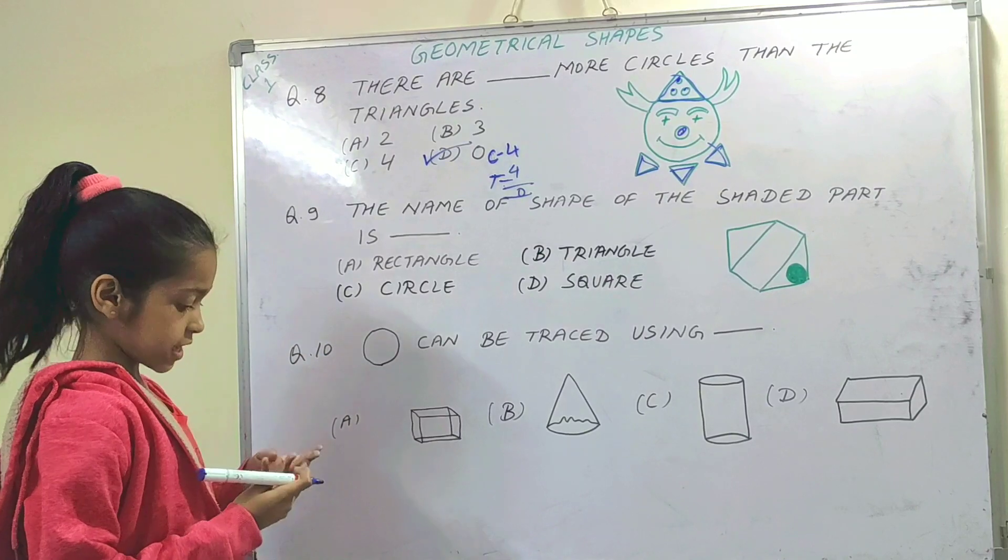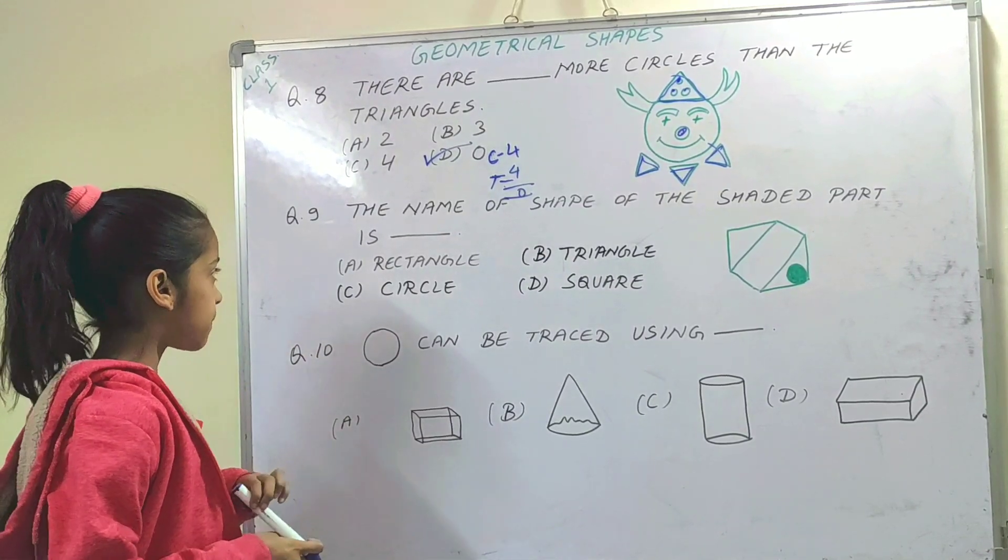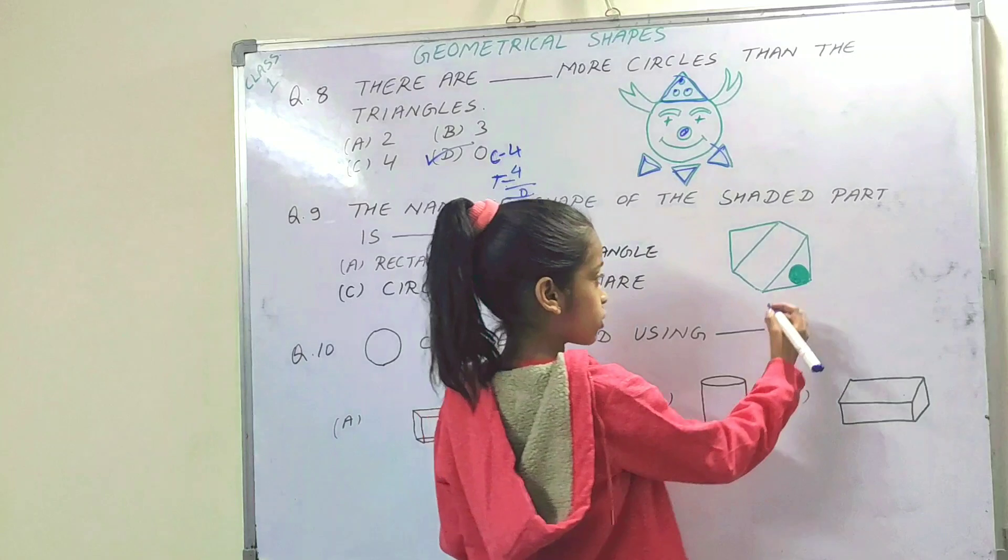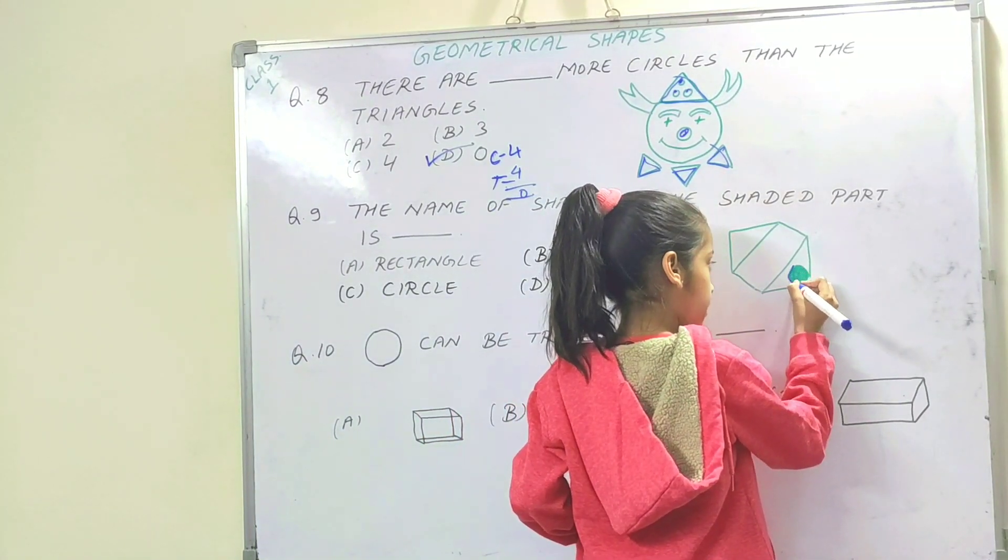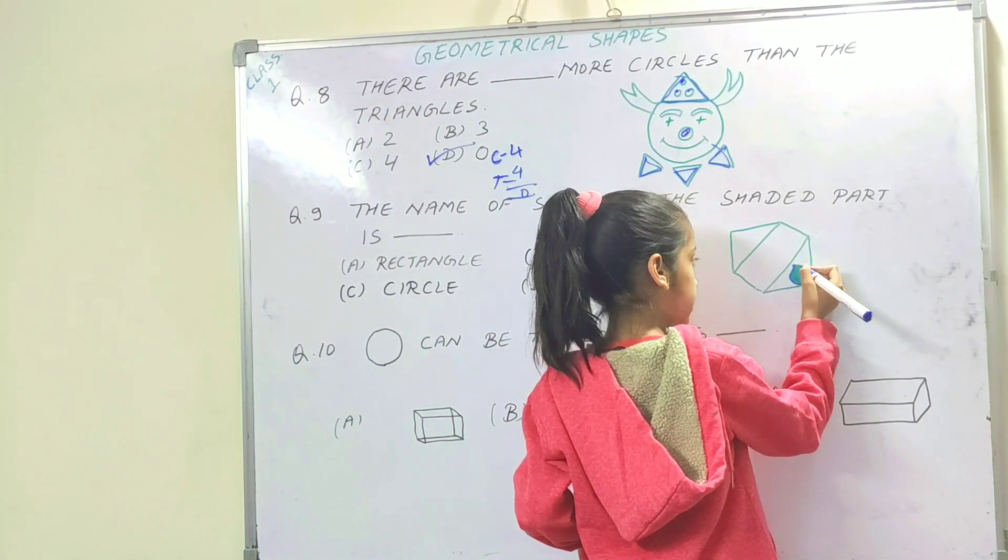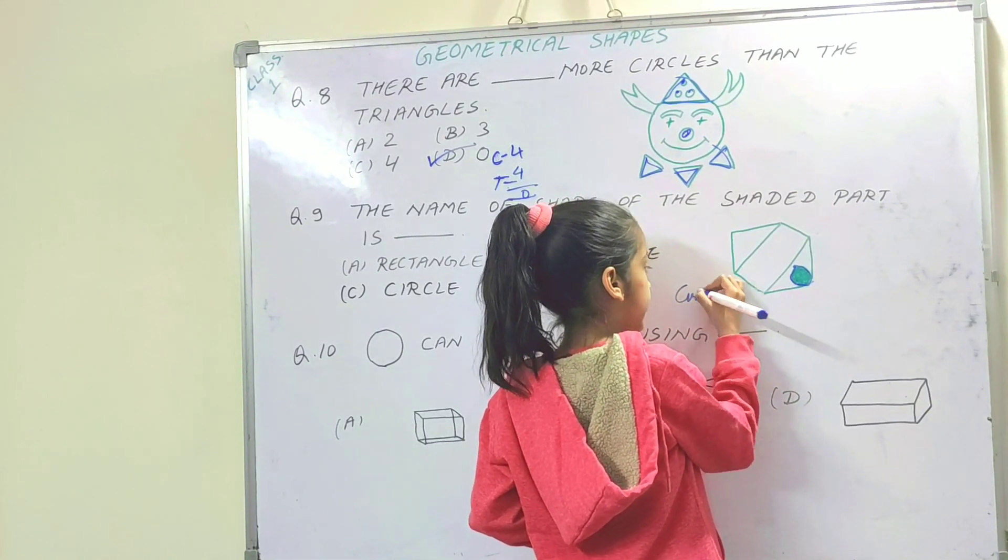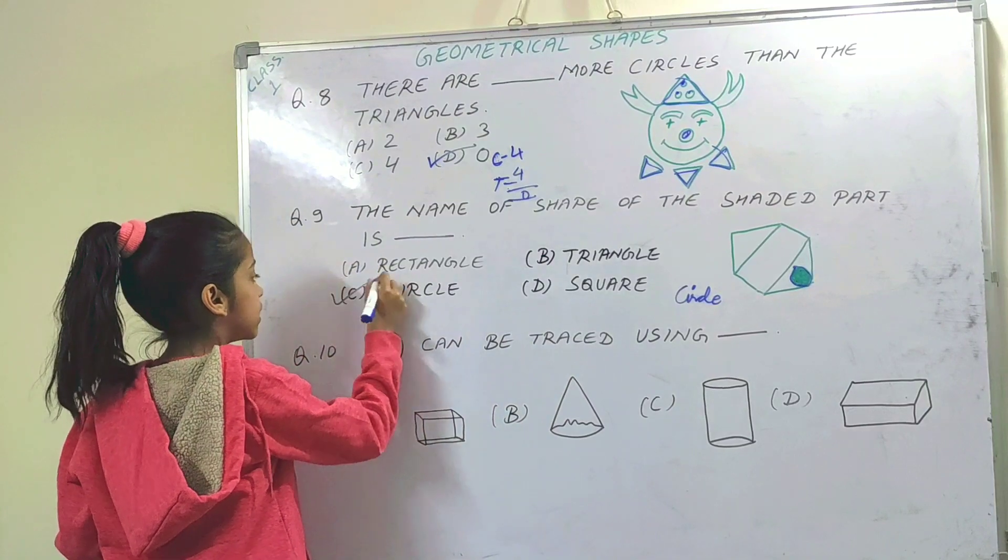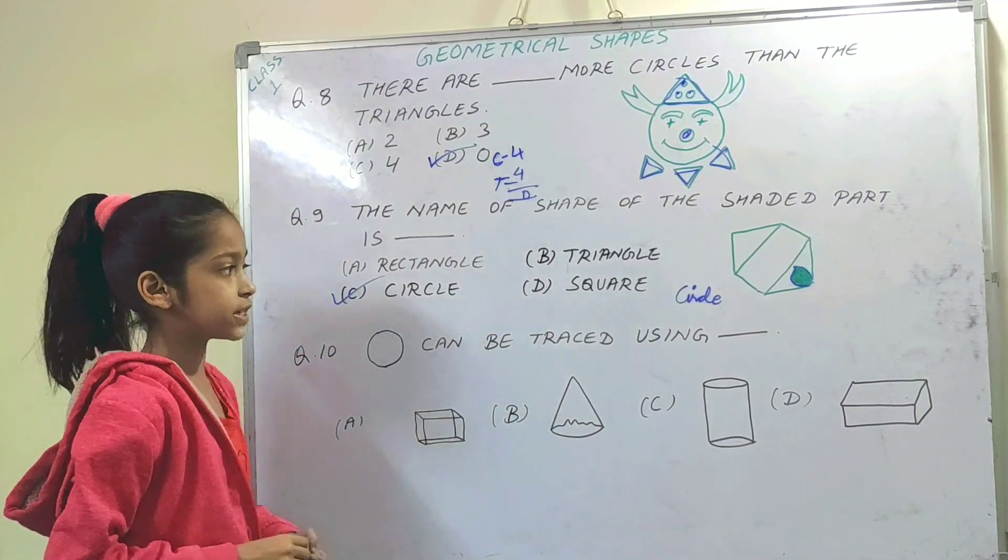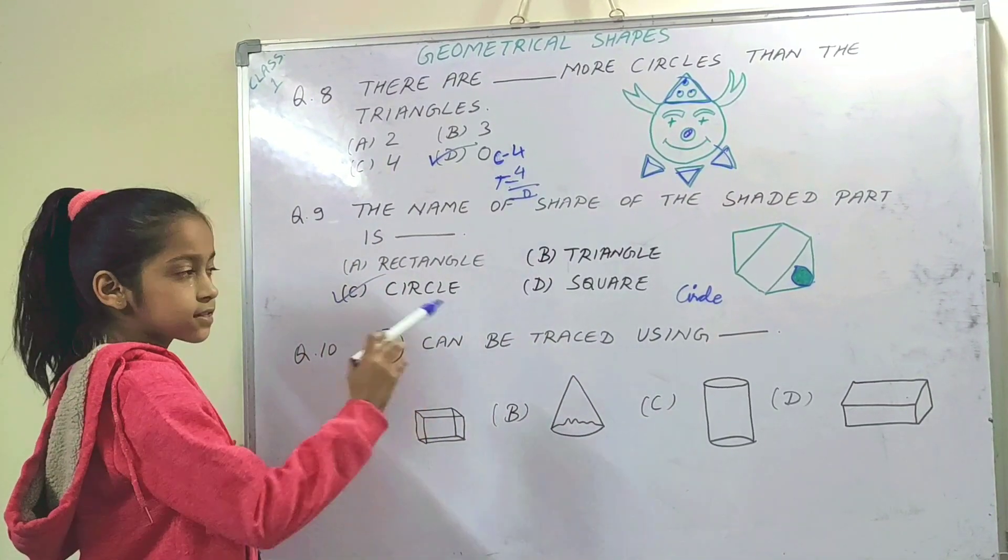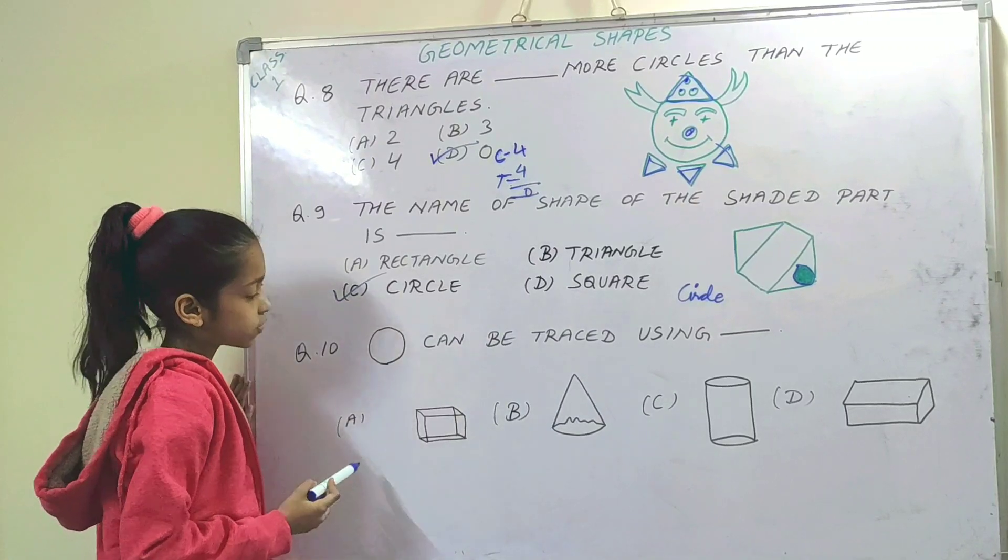The name of the shape of the shaded part is dash. So this is the shaded part. What does this look like? It looks like a circle. So option C is the right option. Circle. This is a circle, this is the shaded part. Next question.